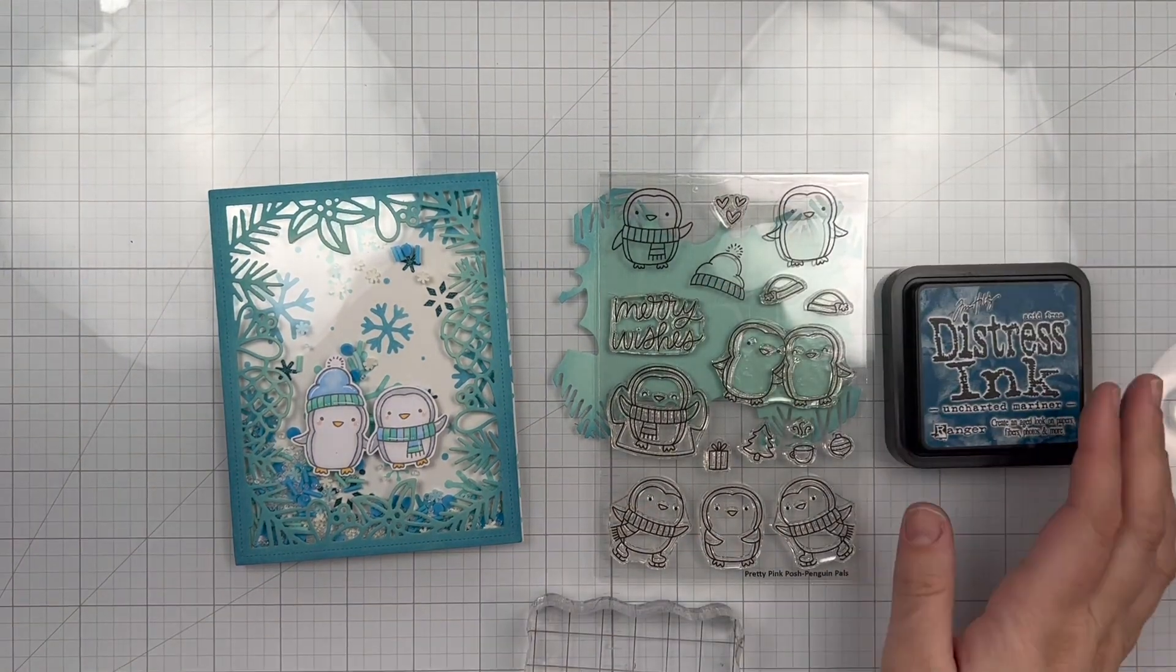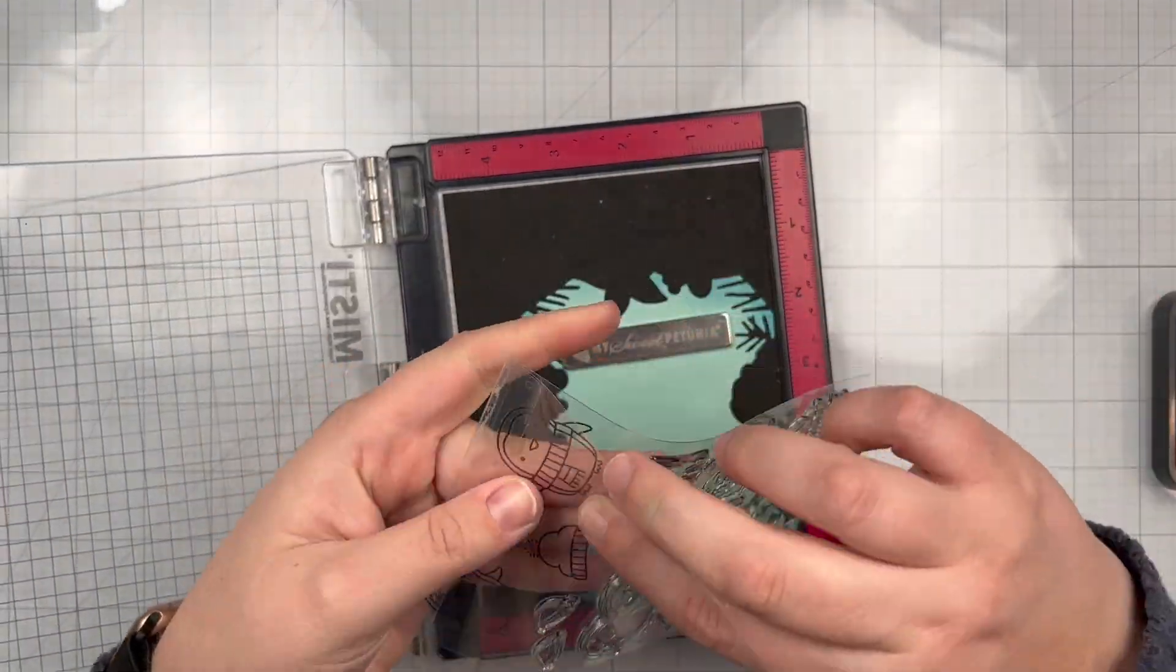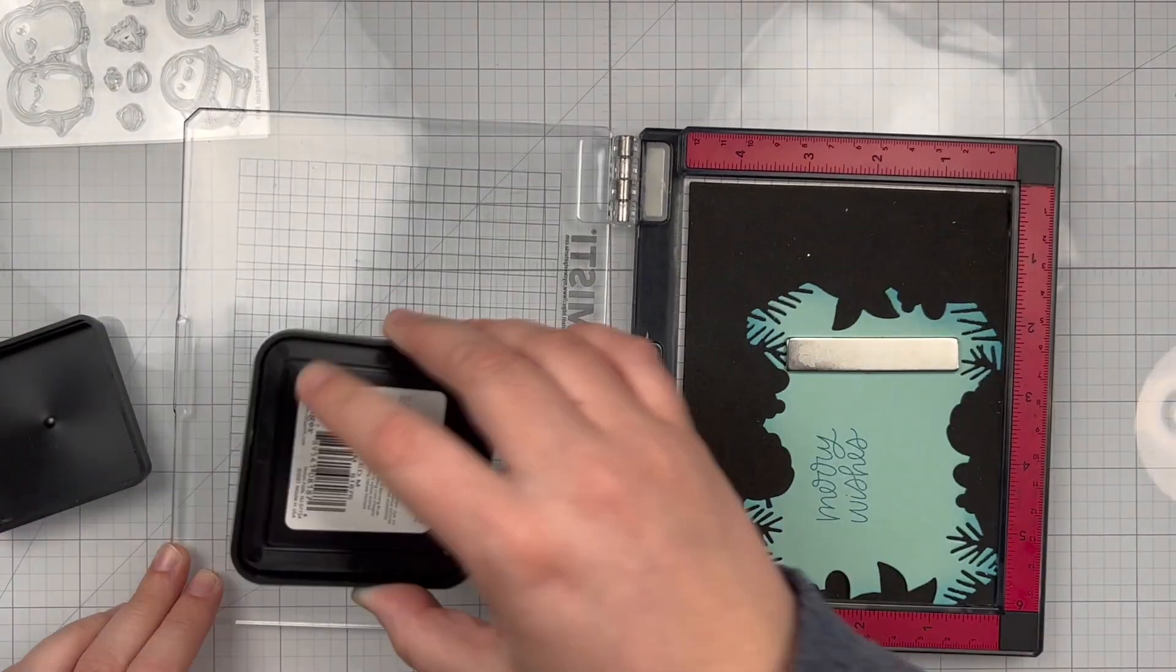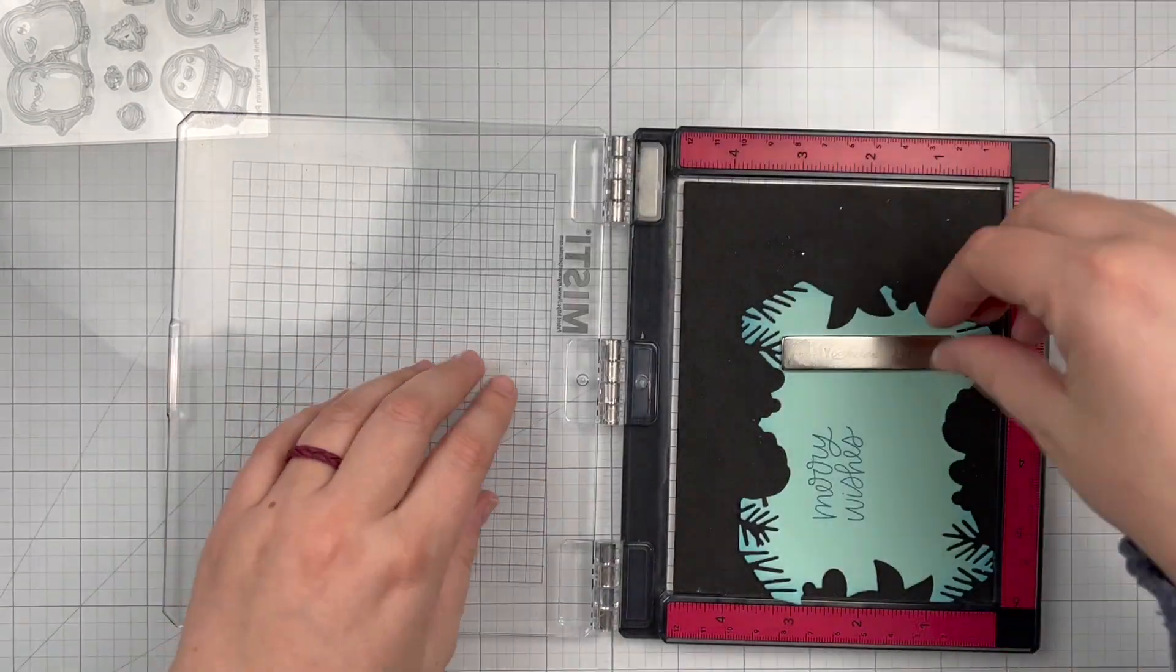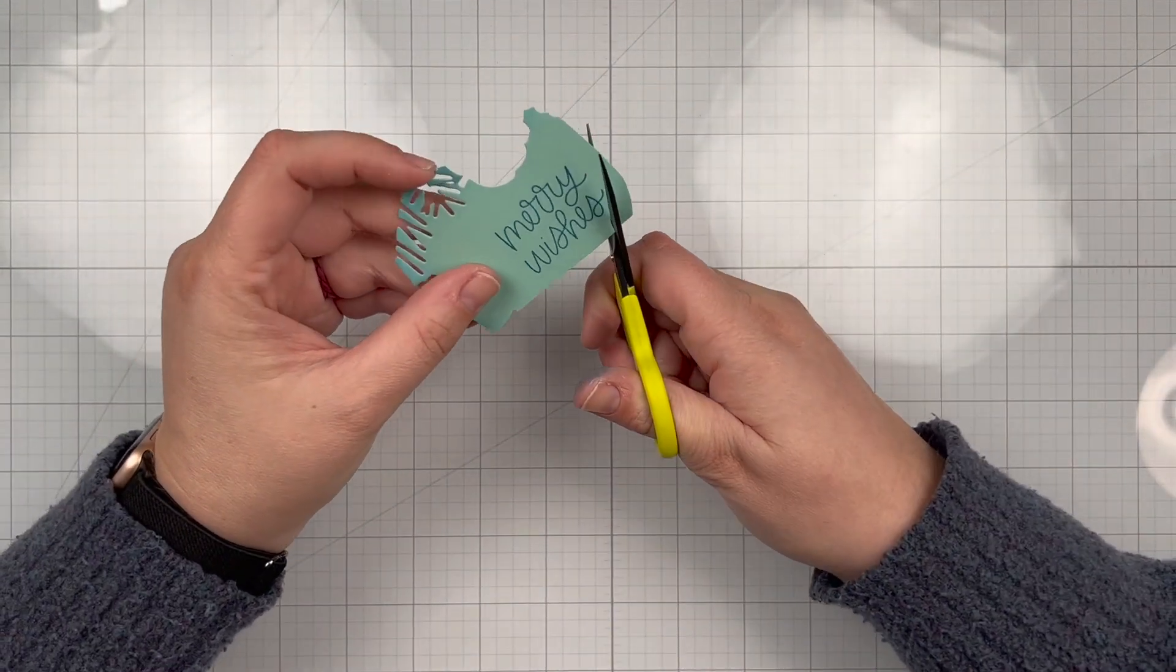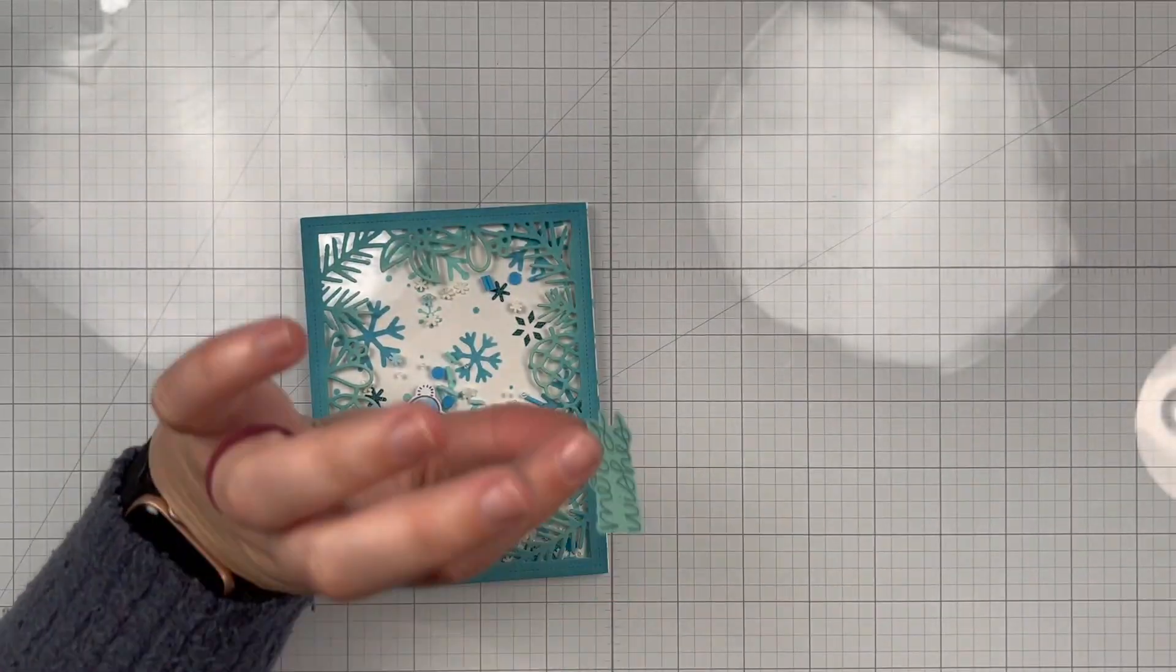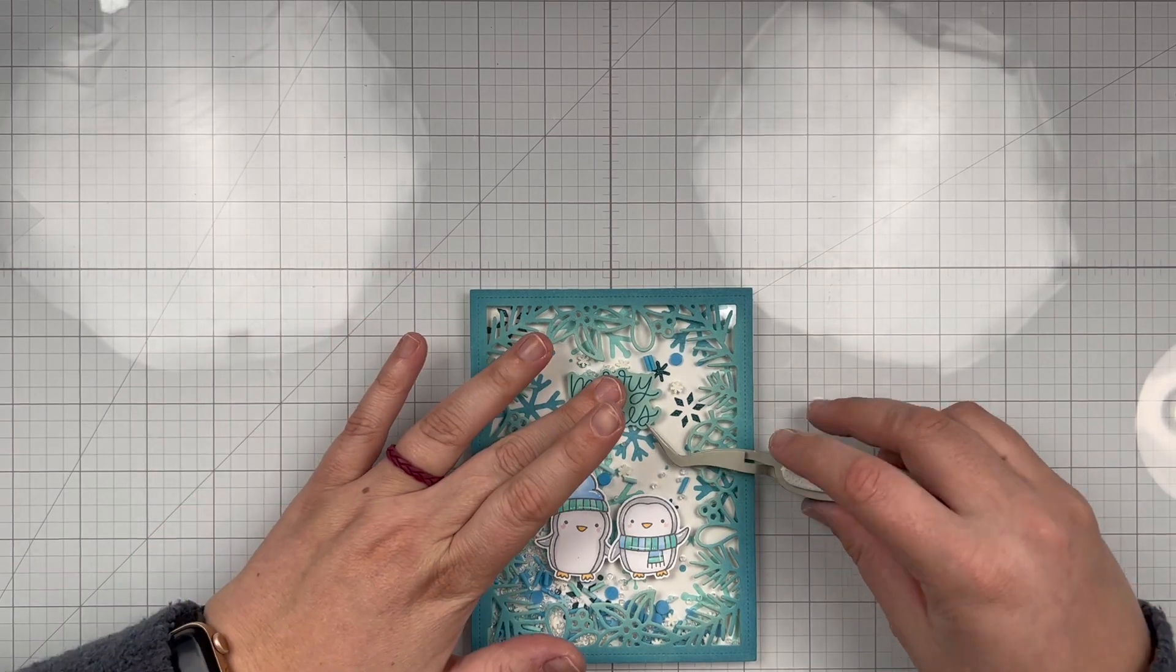I'm going to grab the sentiment from that same Penguin Pals stamp set, and this sentiment says Merry Wishes, and I'm going to stamp it onto that scrap piece of that peppermint green smooth cardstock from my scrapbook.com pack, and I'm going to stamp it using my Uncharted Mariner Distress ink this time, and I used my MISTI because I wanted to make sure that if I needed to stamp it twice, which I do, it would line up perfectly, and my sentiment would look really nice. I'm going to clean up my stamps, and then I will fussy cut around my sentiment very similarly to how I cut around my penguins. So just grabbing my little paper snips here, and I guess you could say bubble cutting around my sentiment, and I'm going to do the exact same thing I did with my penguins by adding adhesive to the back of my sentiment, and then I will adhere that down above my penguins center to the card. So I'll use my tweezers and the grid on my mat again to make sure I have my sentiment as centered as possible above my cute little penguins.